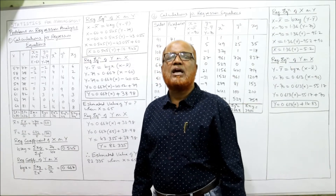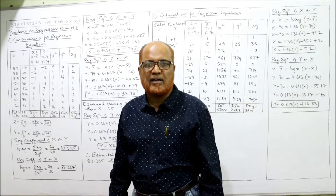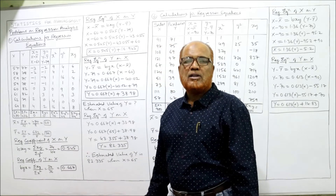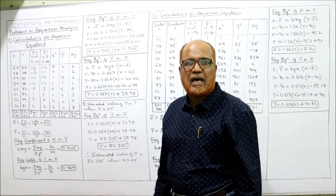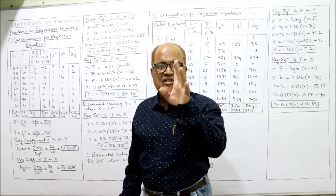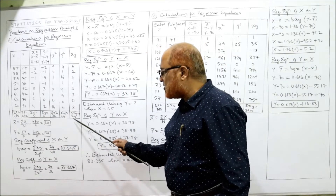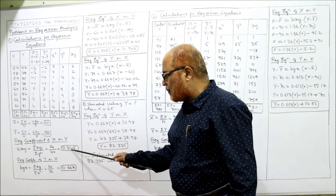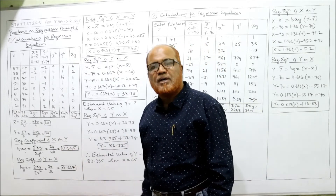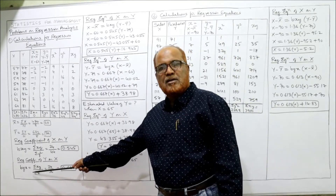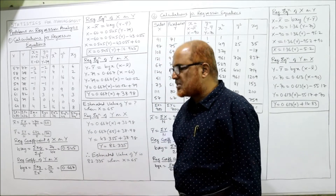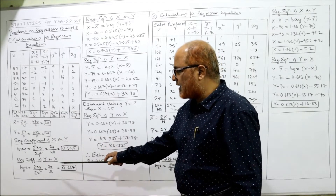Now we need the regression coefficients BXY and BYX. The regression coefficient of X on Y, denoted BXY, has the formula: summation xy divided by summation y². So BXY = 24 ÷ 44 = 0.545. Similarly, the regression coefficient of Y on X, BYX, equals summation xy divided by summation x². So BYX = 24 ÷ 36 = 0.667. We have now calculated both regression coefficients.